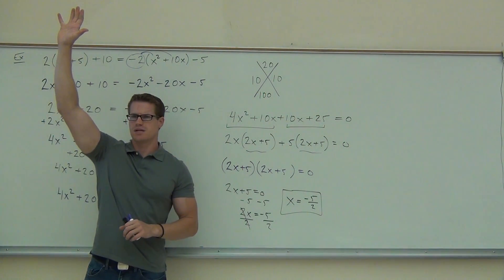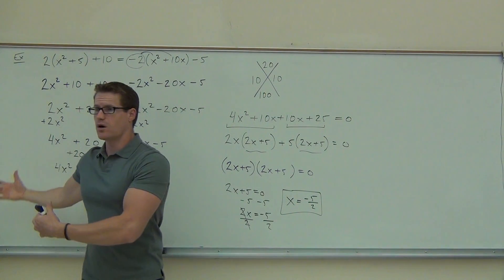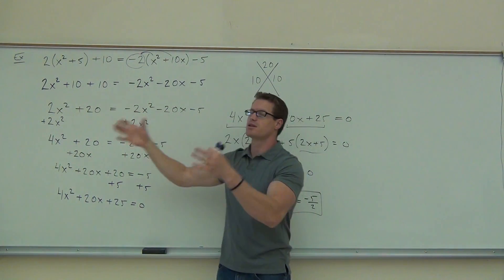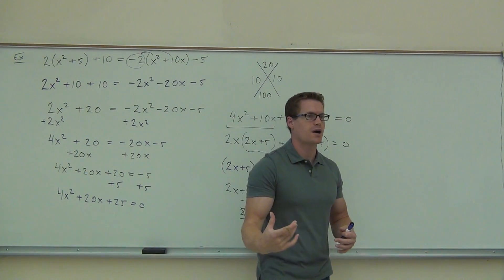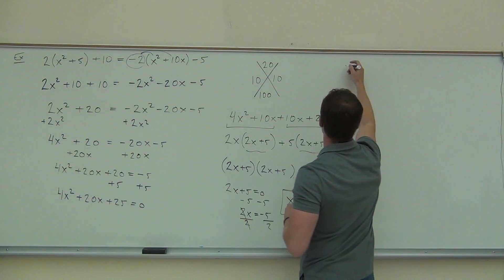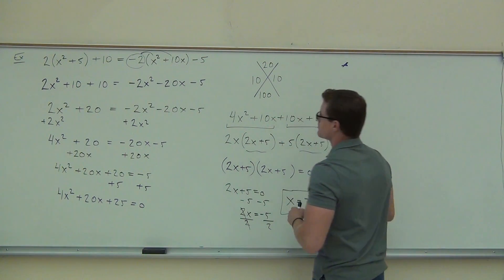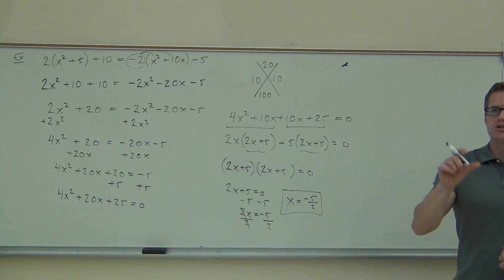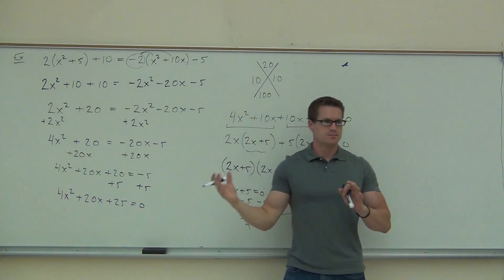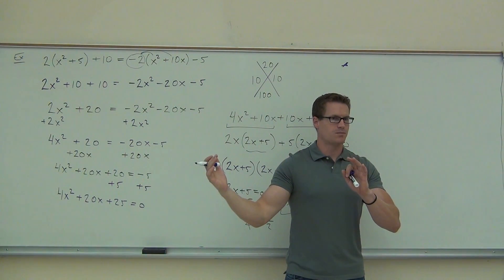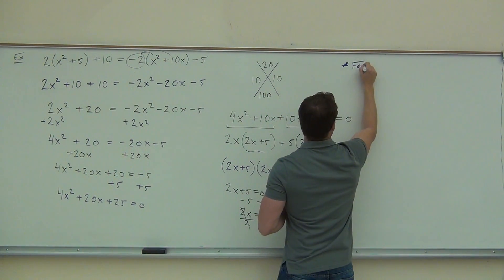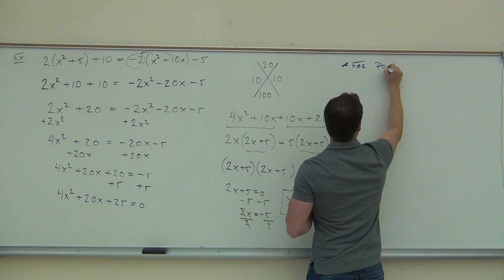As far as we go in that problem. How many people feel okay with this? So yeah, they're long, right? They're long examples. You have to distribute, you have to combine like terms, you have to get everything to one side if it's a power 2 or a higher and then you get to solve it. So I'm going to make a couple notes on here for you to write down just to make sure you have this. For power 2 polynomials, if you ever see a power 2, set it equal to 0, set the whole equation equal to 0 and factor.